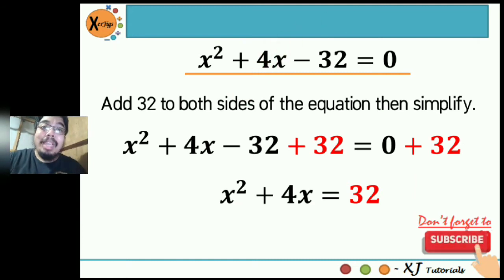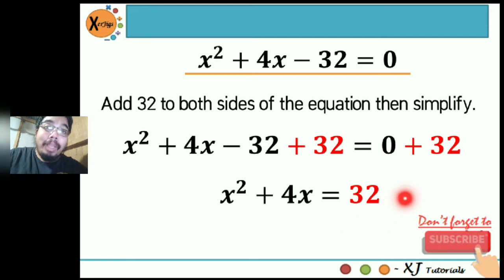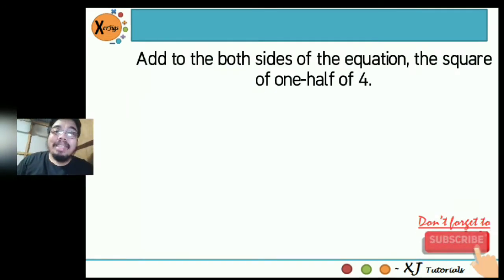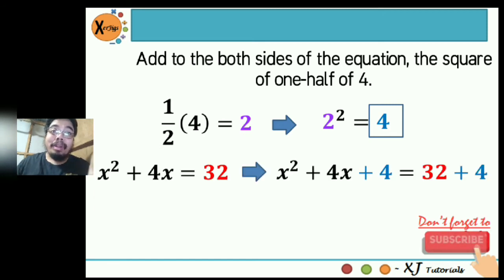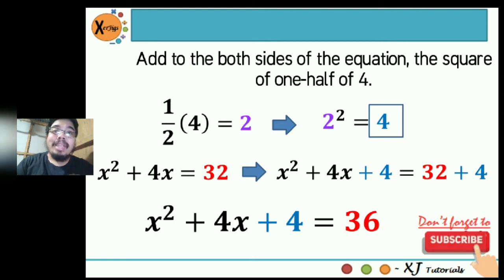The next step is to add to both sides of the equation the square of one half of b. The value of b is 4, so one half of 4 is 2, and 2 squared is 4. We add positive 4 to our equation, giving us x squared plus 4x plus 4 equals 36, which is the sum of 32 and 4.